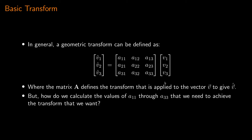So V equals (V1, V2, V3) and we are transforming that to give V-hat, which gives V-hat-1, V-hat-2 and V-hat-3. We have a three-by-three matrix of coefficients that define the geometric transform. The problem is how do we calculate the values of A11 through to A33 needed to achieve the transform we want?